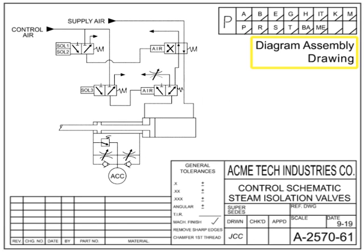A diagram assembly drawing shows installation of equipment using symbols and is often made in pictorial form. Diagram assembly drawings are typically used to depict wiring, piping, and other systems where scale models and dimensions are not required. Each part on a diagram assembly is indicated by a picture.